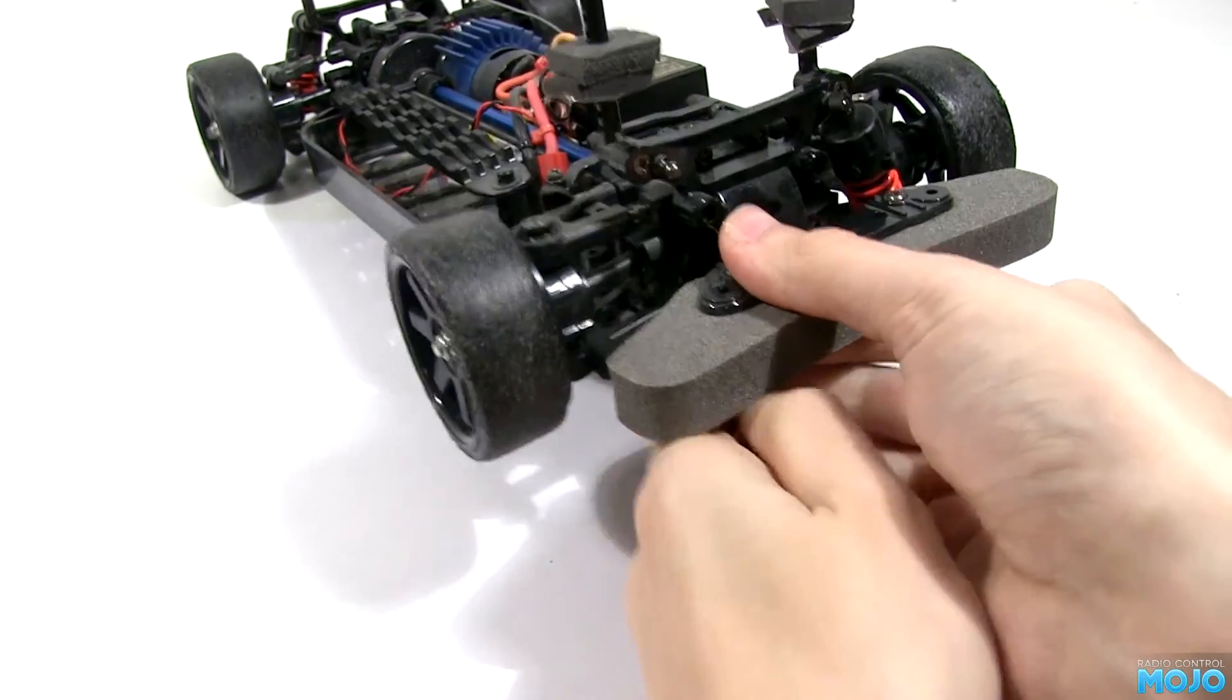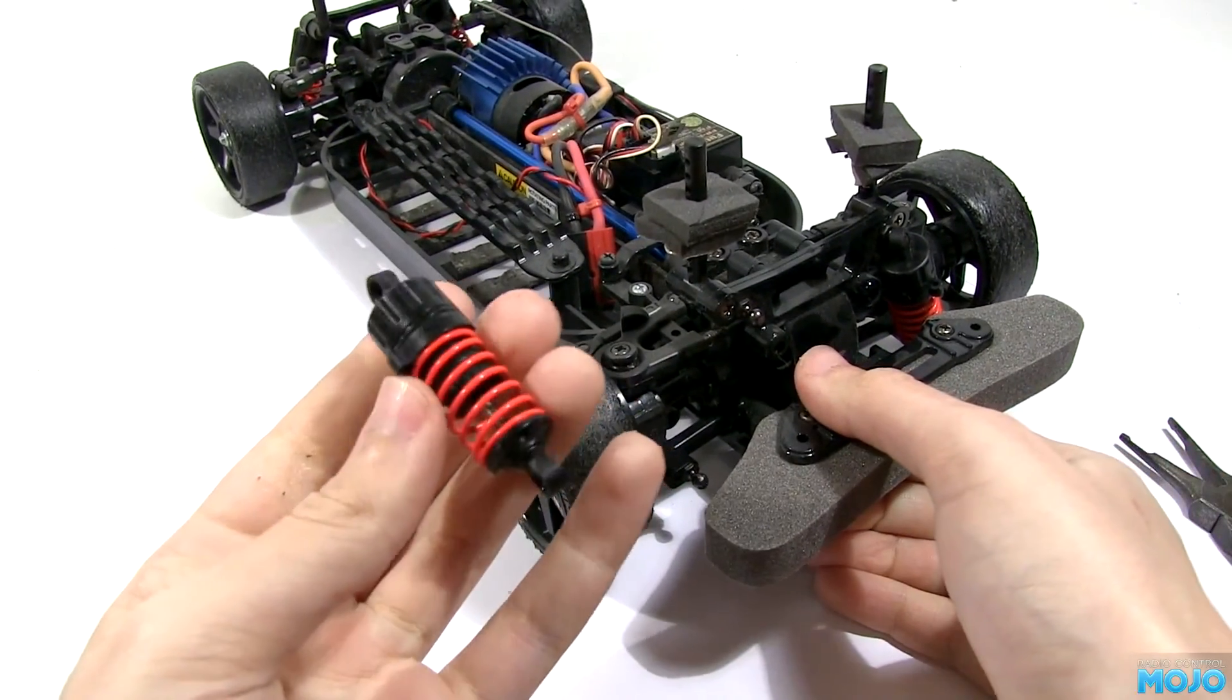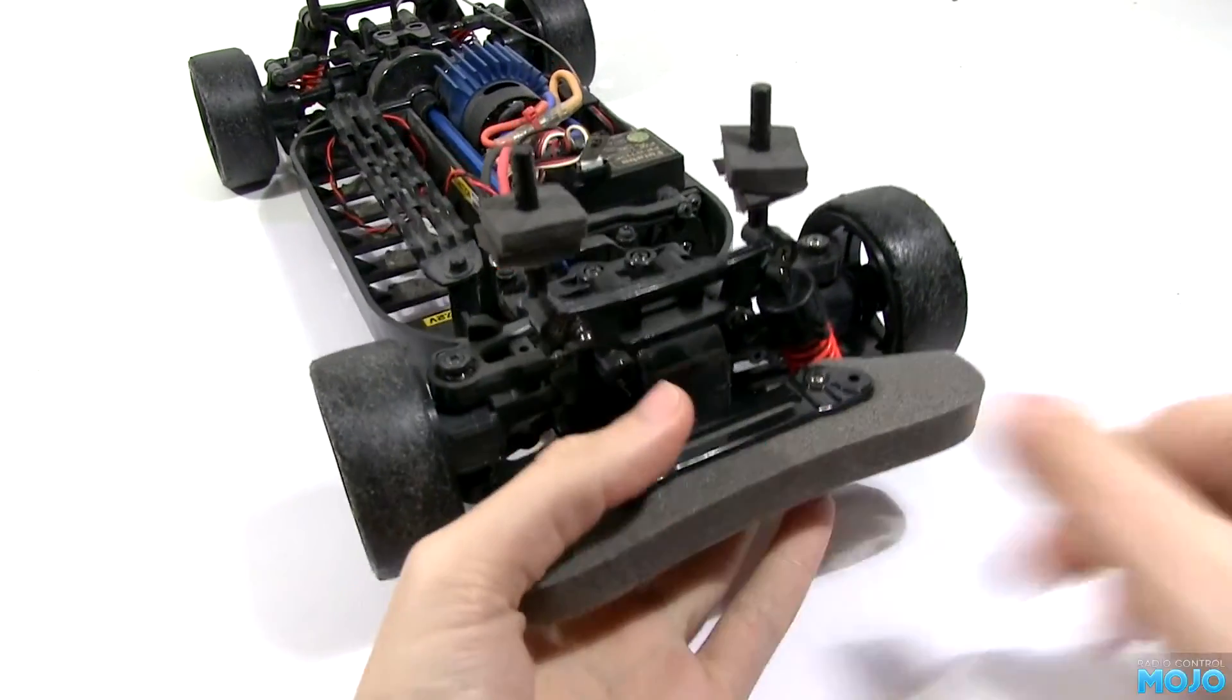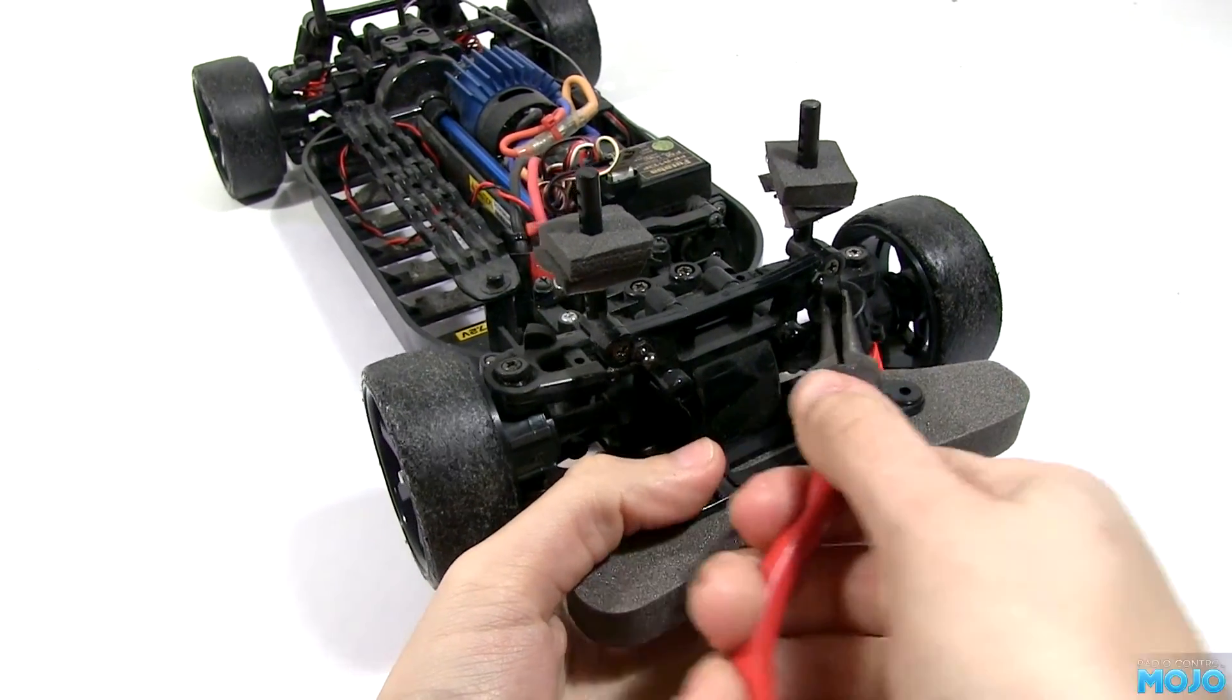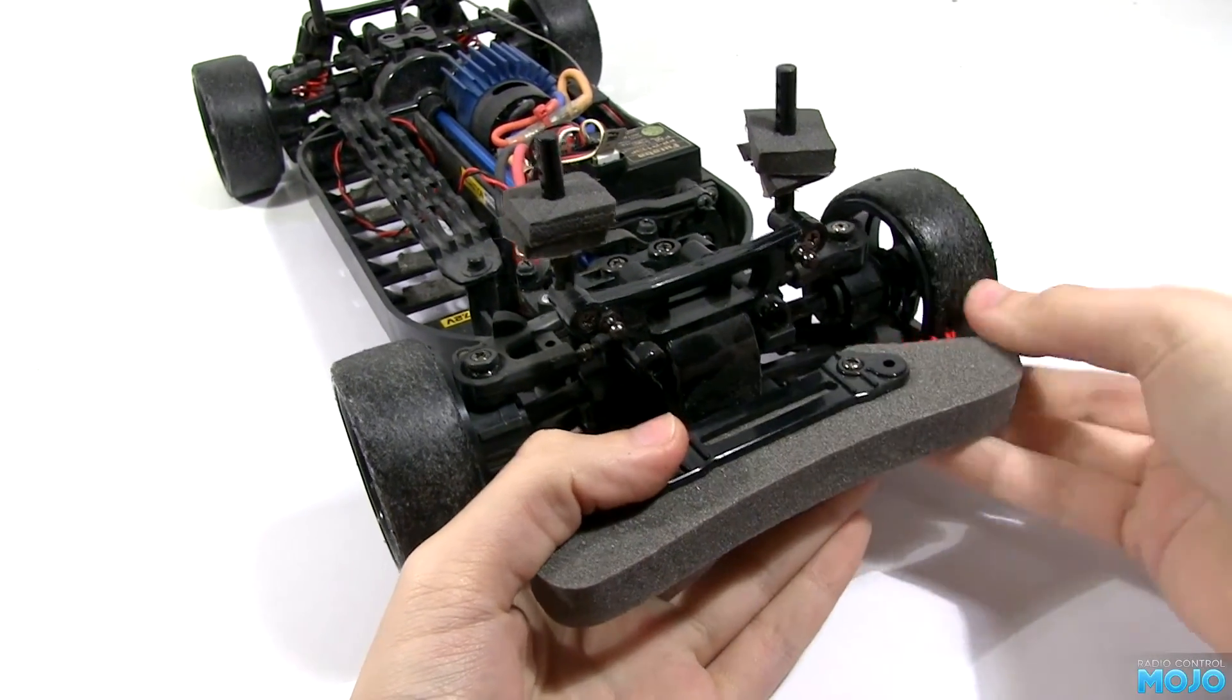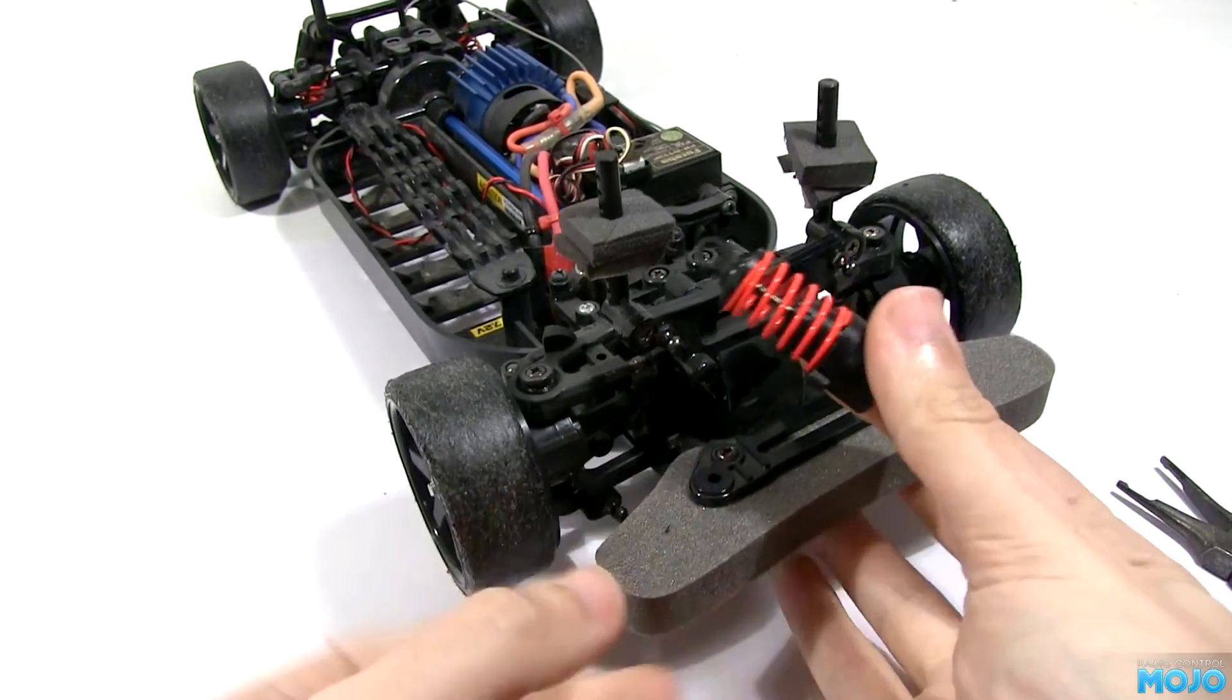Right, we'll start by taking the stock dampers off. They have an open ball end at the top and at the bottom, so they just pop off. The TT-01D comes with oil dampers, so these will be going in a bag to use on something else later.